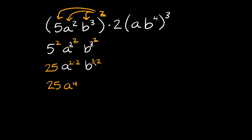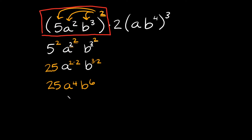And then we have 3 times 2, which is 6, so we're going to have b to the 6th power. So this whole expression simplified down to 25 a to the 4th b to the 6th. That's the left side.